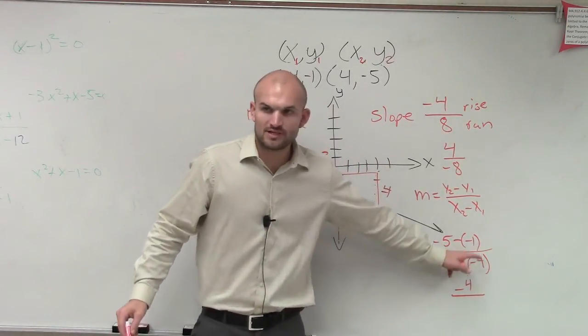Okay. Double negative makes it a what? Positive. Negative 5 plus 1 is? Negative 4. Negative 4 over double negative. Positive. 4 plus 4 is? Eight.